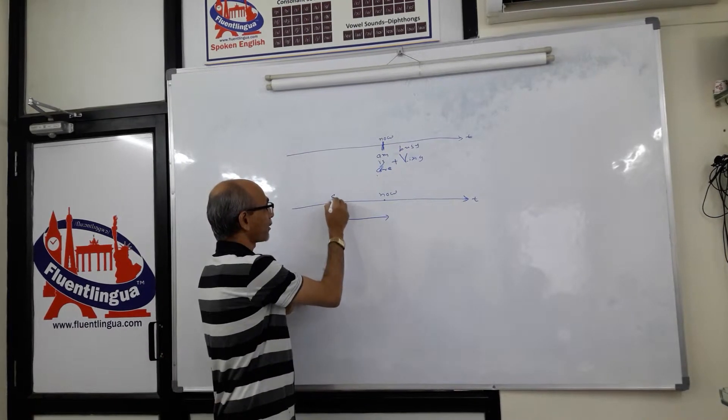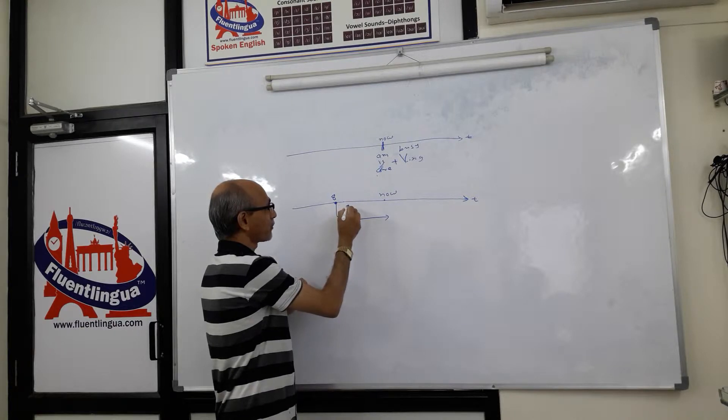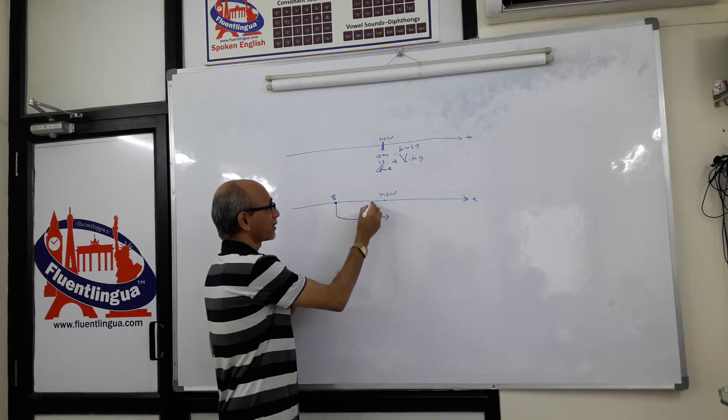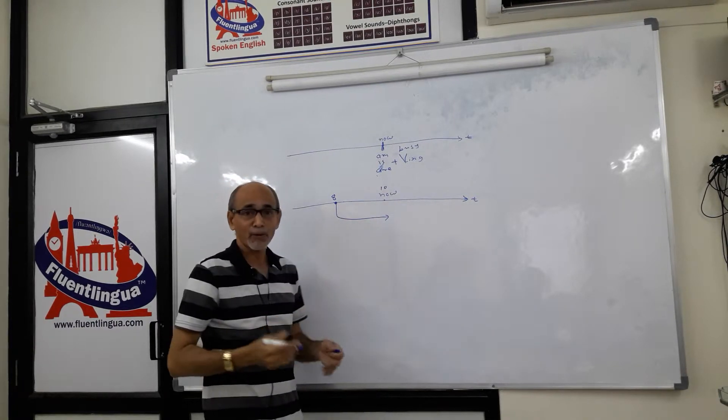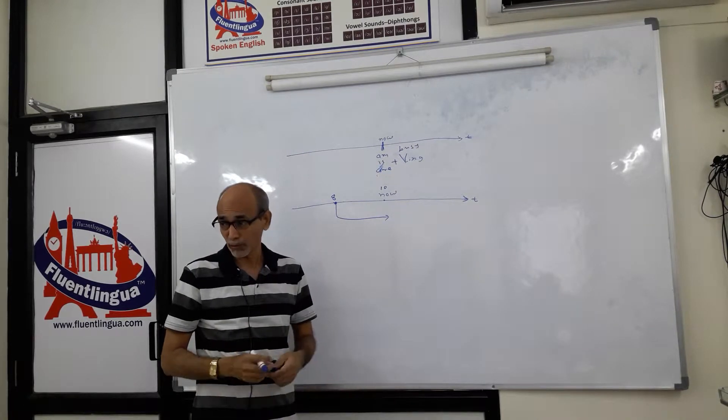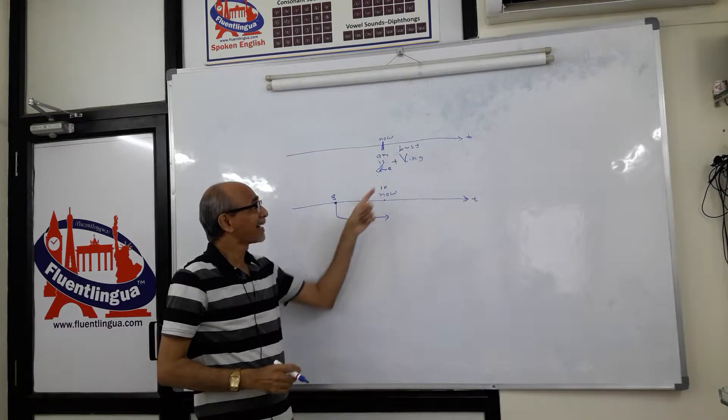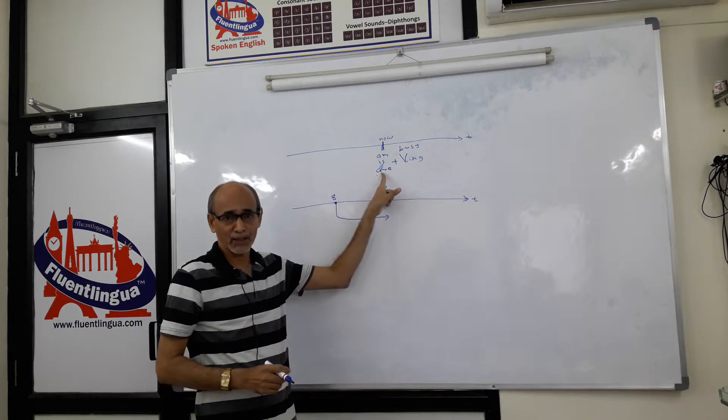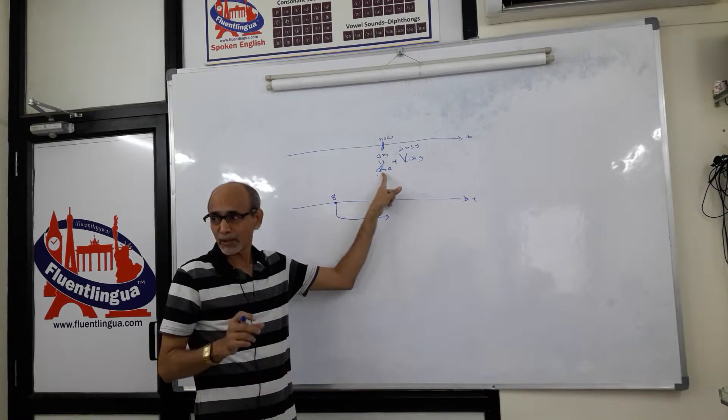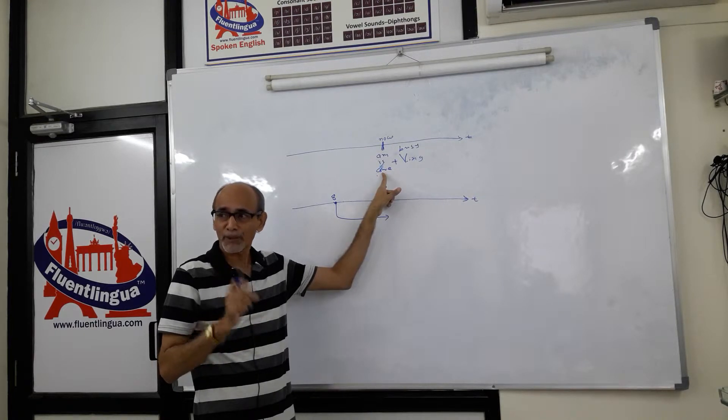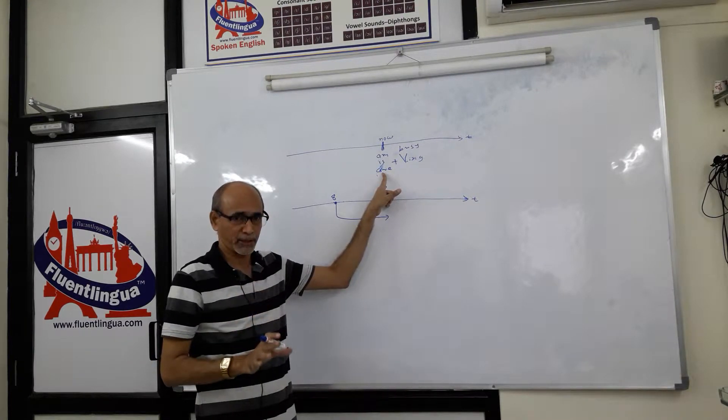For example, at 8 o'clock I was busy, 8:10 I was busy, 8:30, 9, 10, and even right now I am busy. It's 10 o'clock now. So to talk about past to present situation, I cannot use am, is, are. They are used for the present moment only, generally.